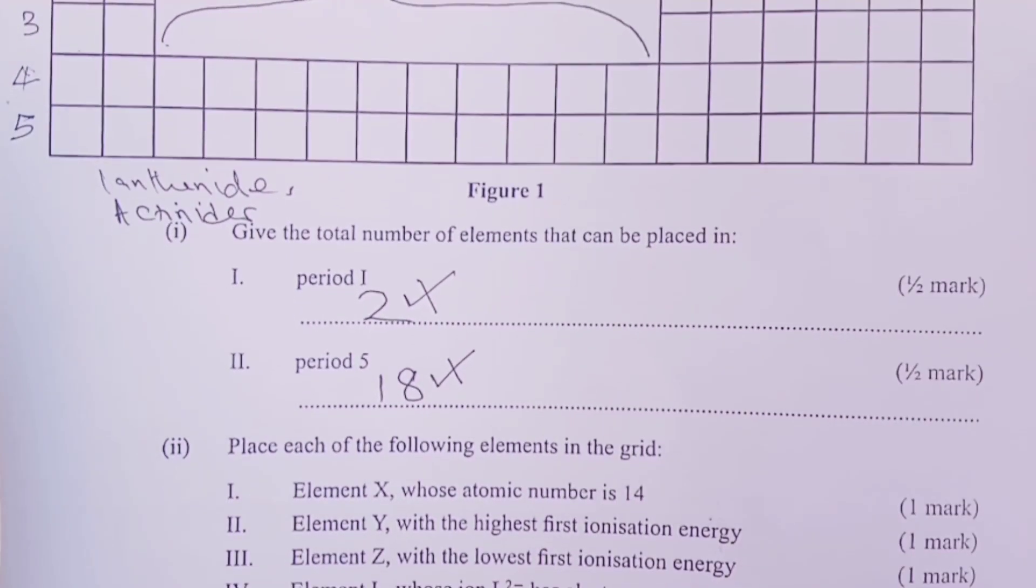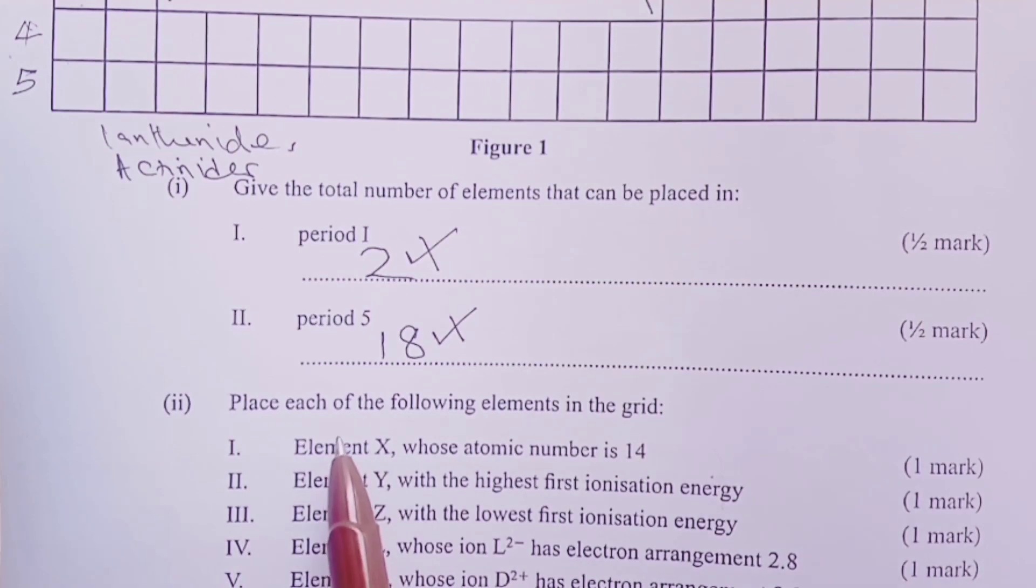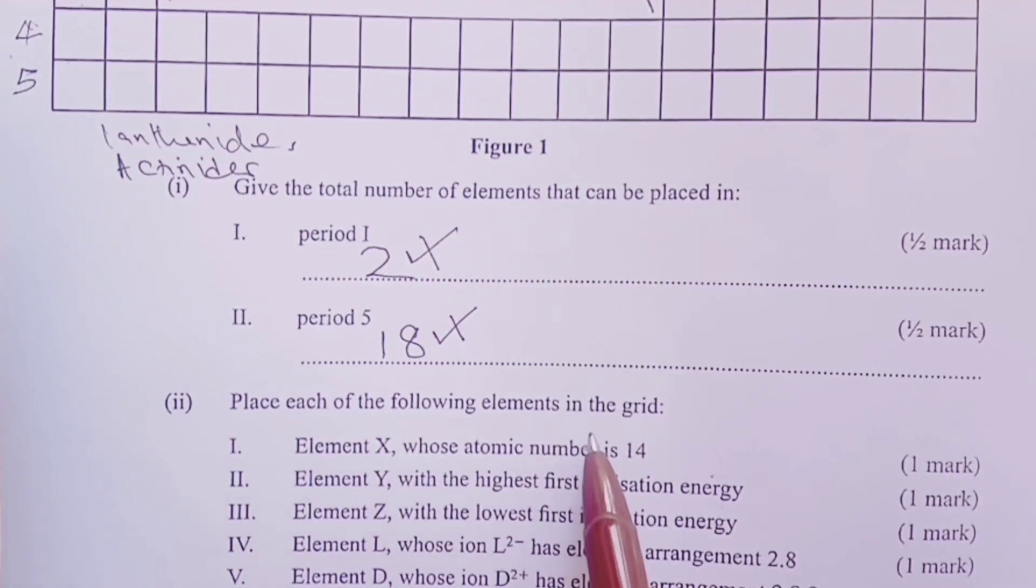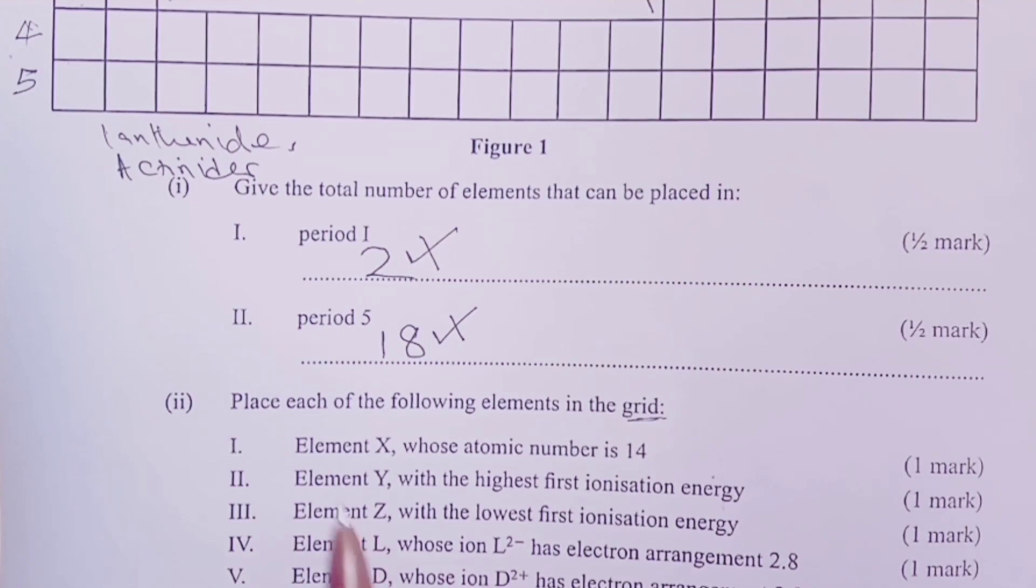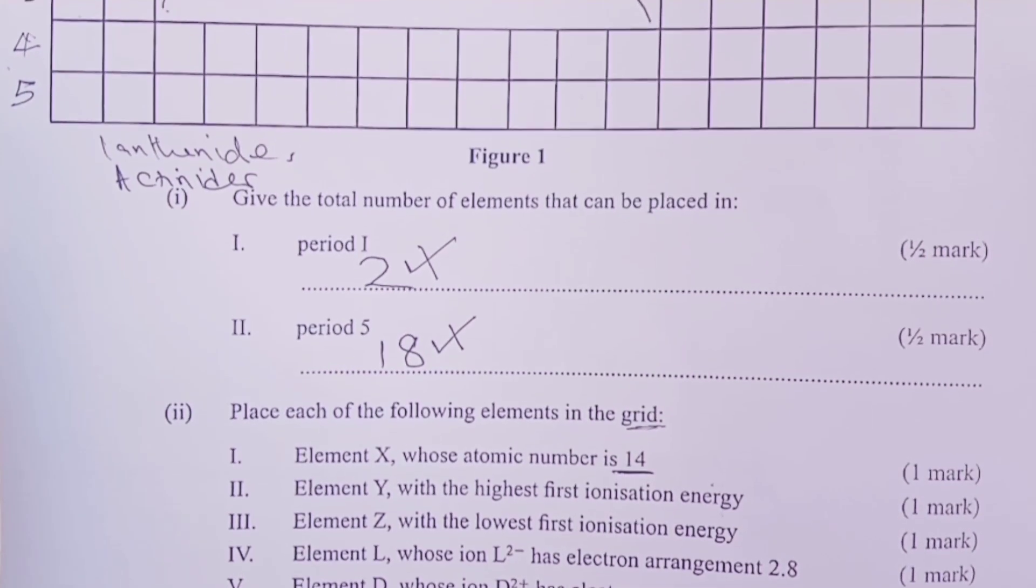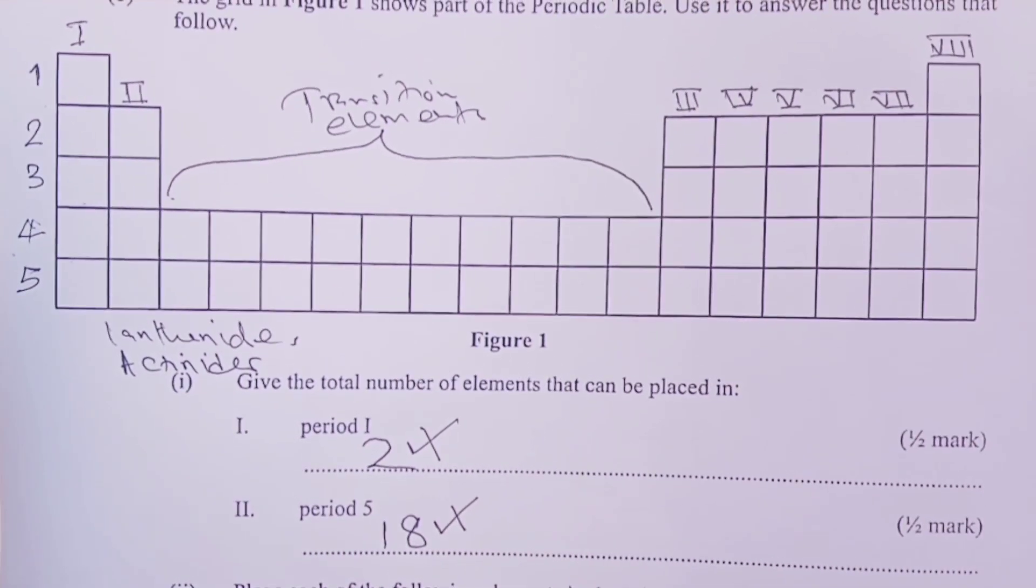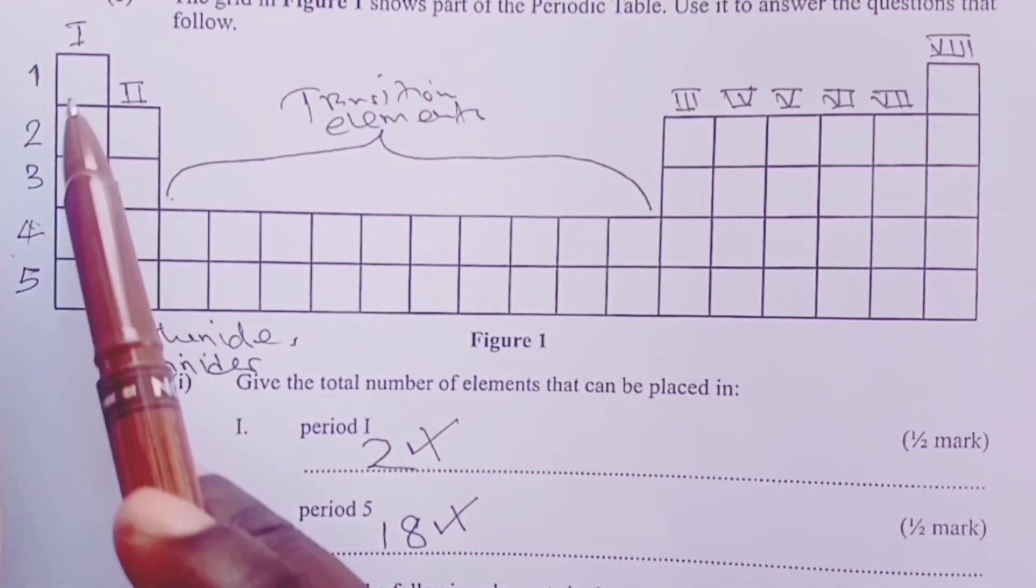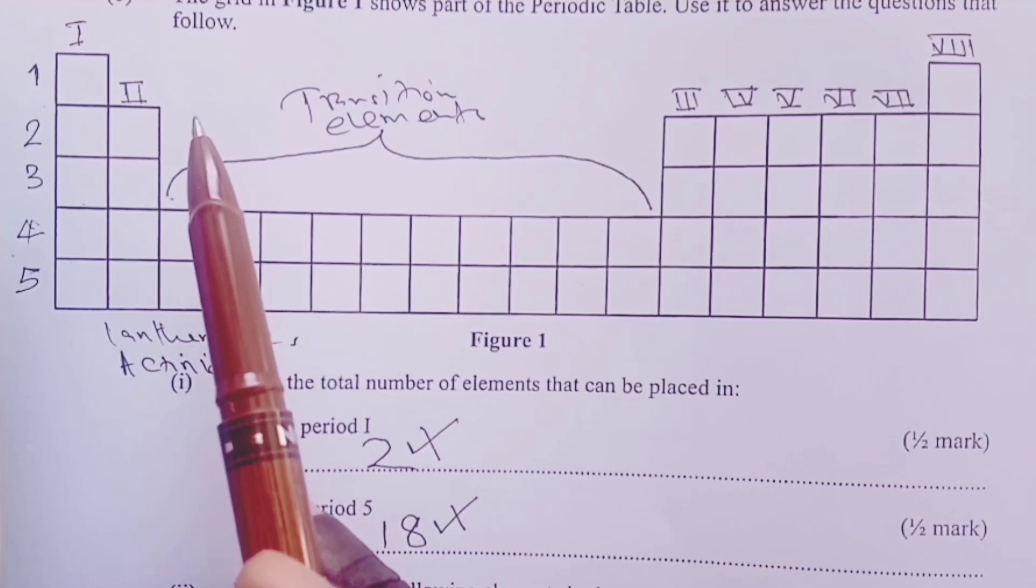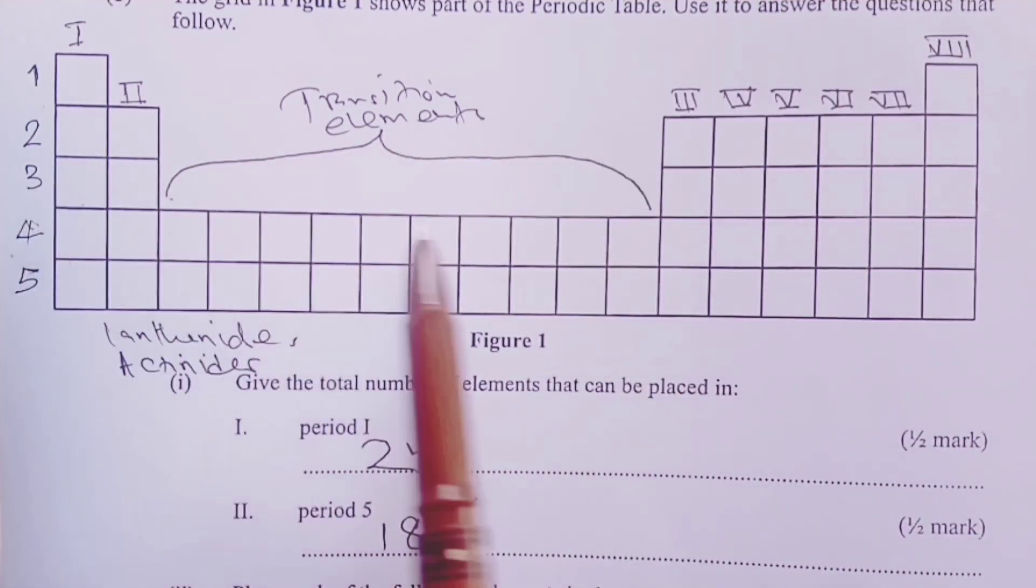For Roman 2 part B, we are asked to place each of the following elements in the grid. We start with element X, whose atomic number is 14. This was very easy. A student was supposed to know that the first 20 elements are placed in this grid based on their atomic numbers and we do that period wise, that is period after period.